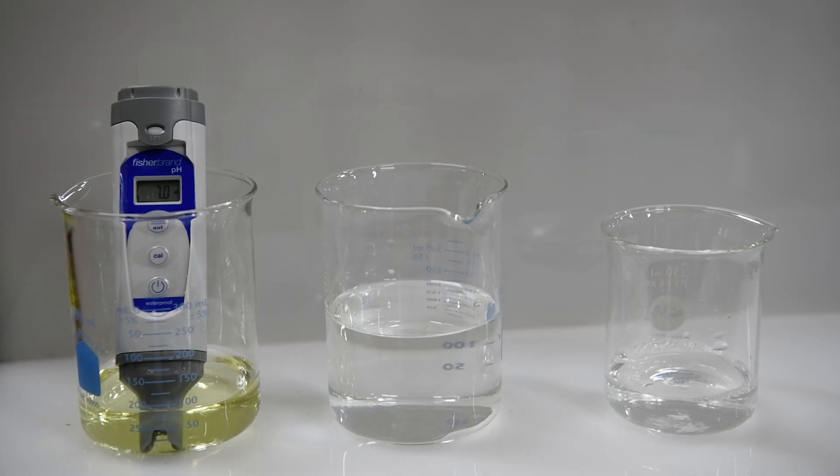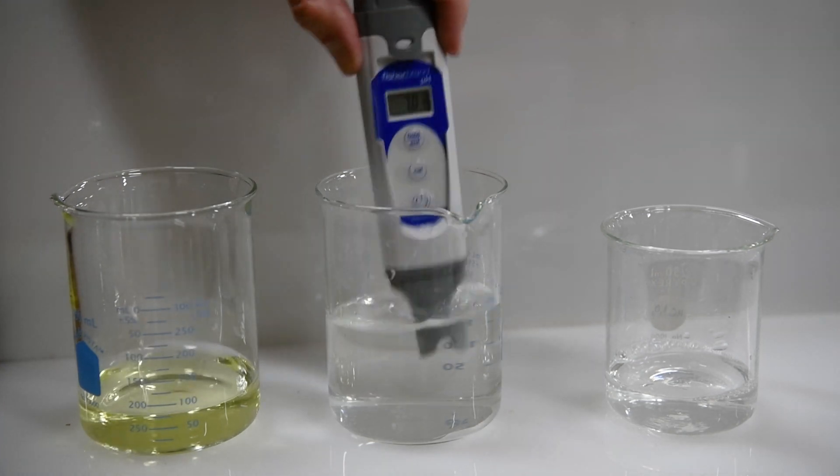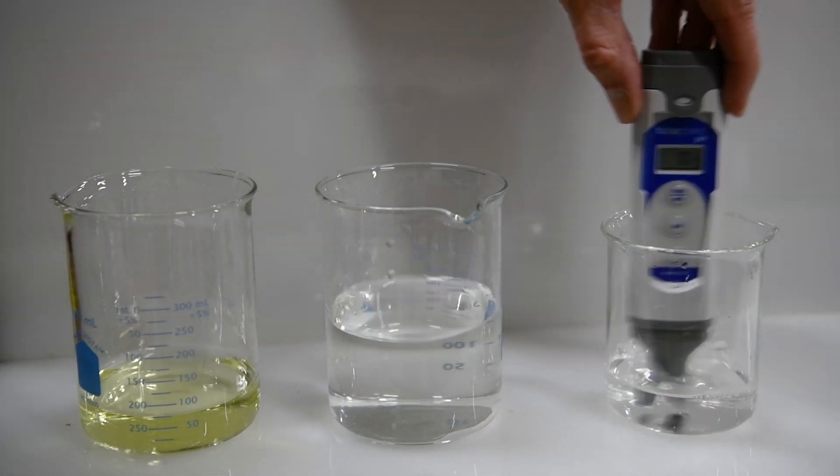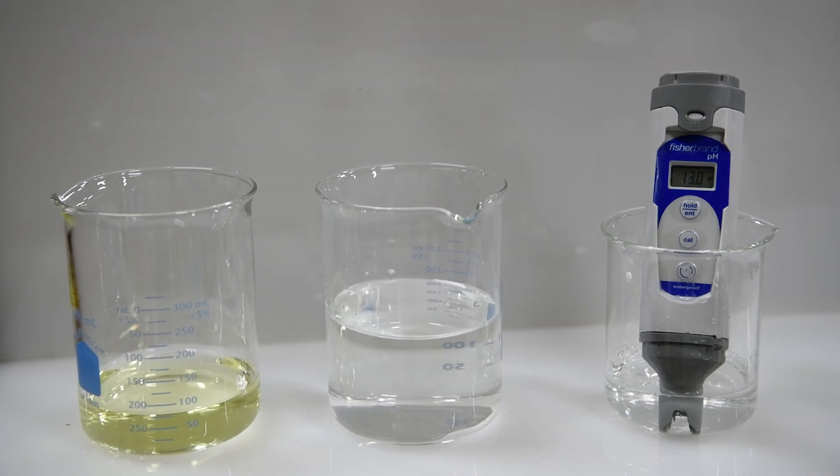Our last sample will be ammonia. So we'll rinse off the probe, place it in our ammonia. Wow, looks like our pH is at about 13, so ammonia is apparently very basic.